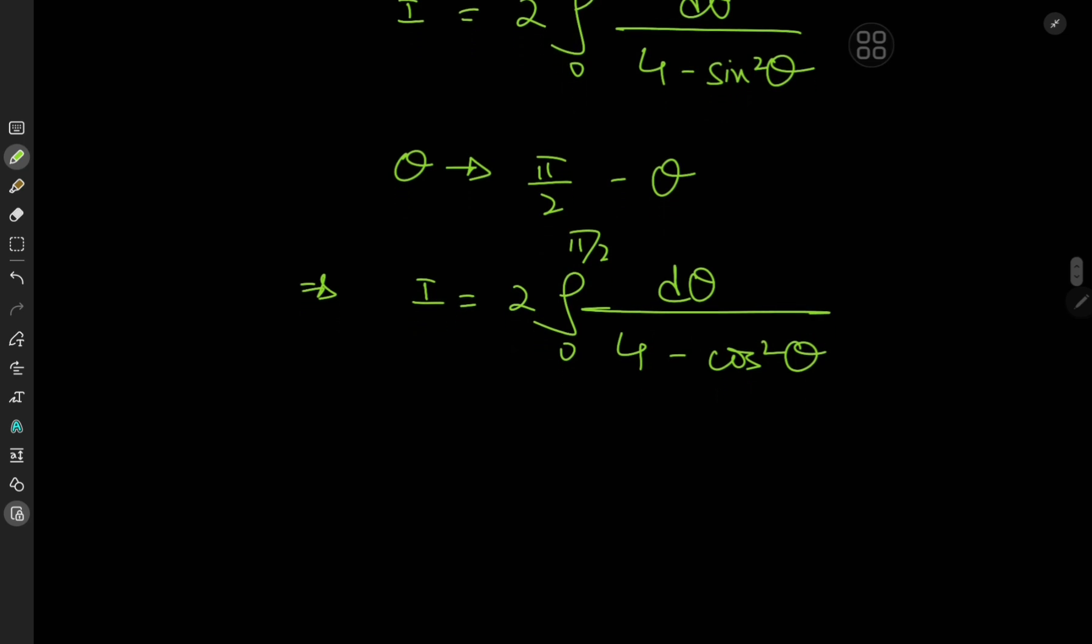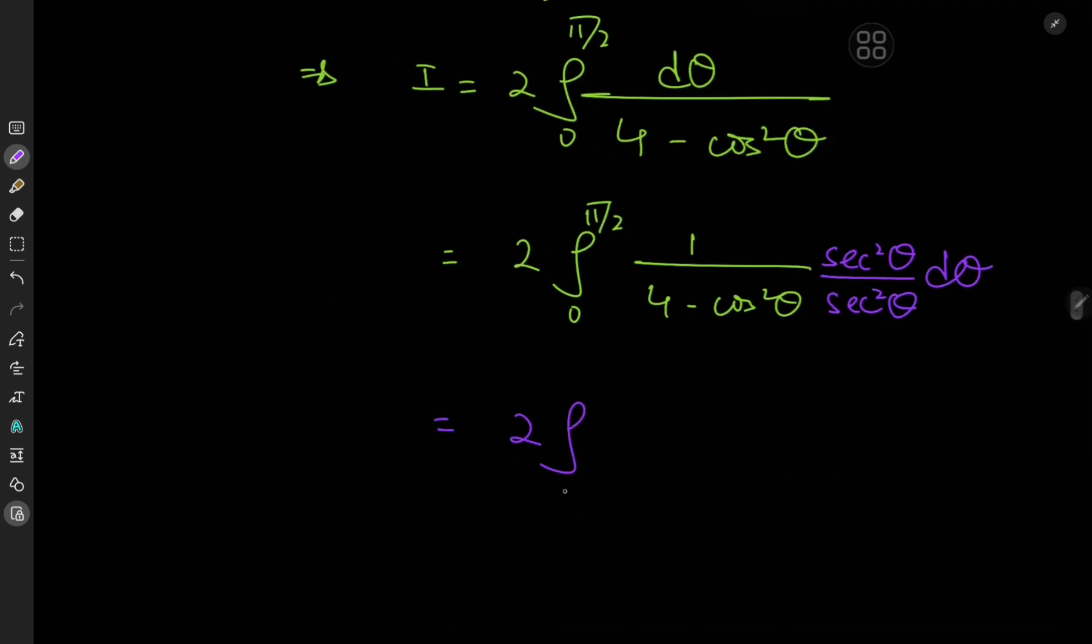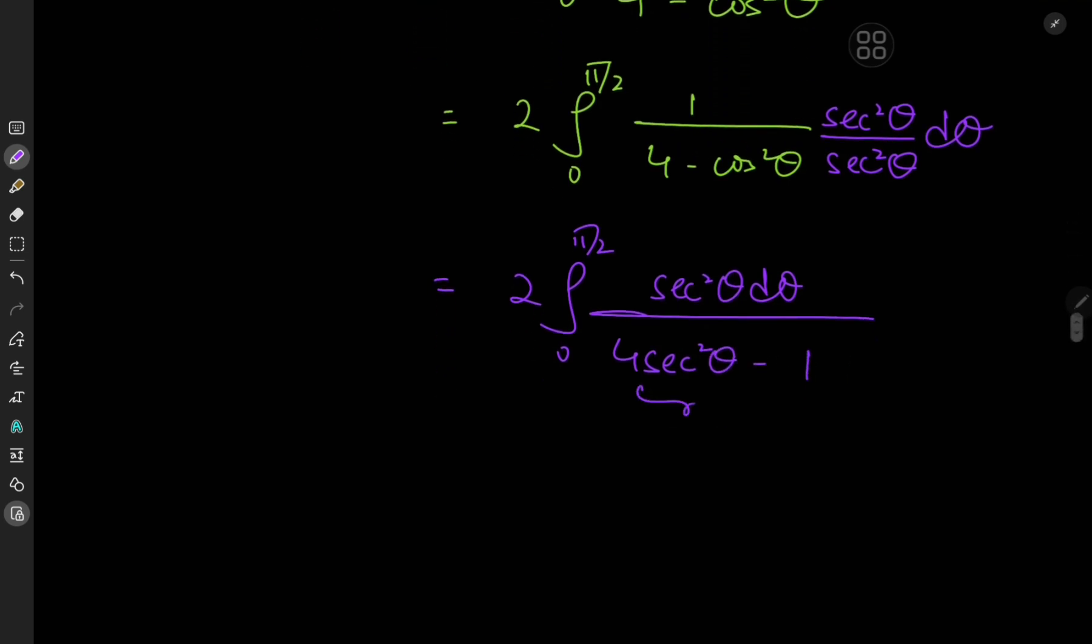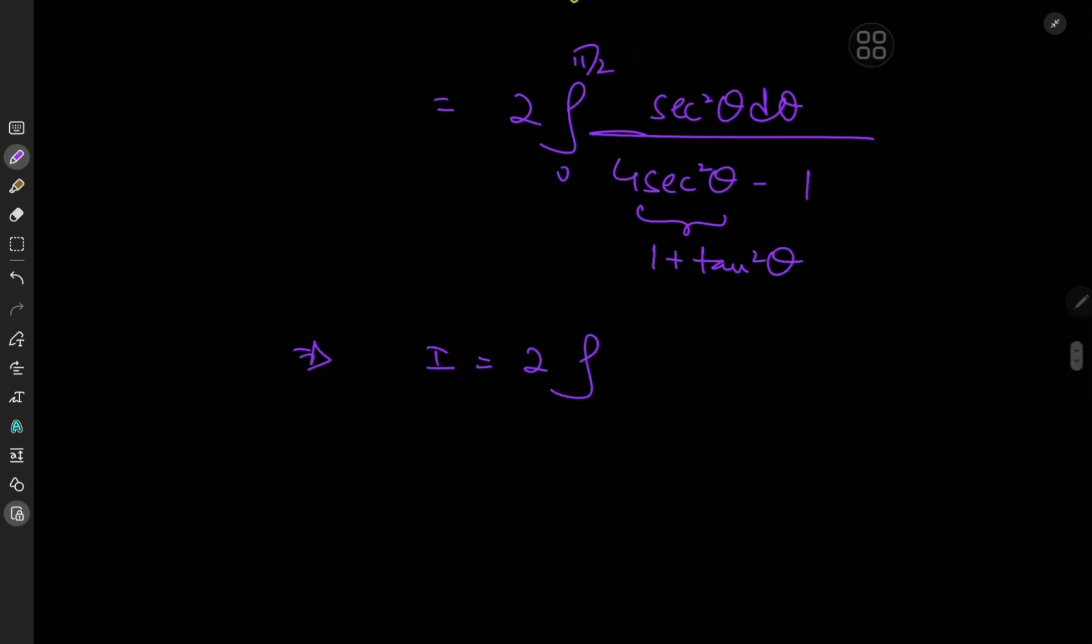What I want to do is expand using 1. The version of 1 I'm going to invoke right now is secant square theta divided by secant square theta. This is pretty convenient because now you have twice the integral from 0 to pi by 2 of secant square theta d theta divided by 4 times secant square theta minus 1. We can expand the secant function as 1 plus tangent squared. So this implies we have I equal to twice the integral from 0 to pi by 2 of secant square theta d theta divided by 3 plus 4 times tangent squared theta.